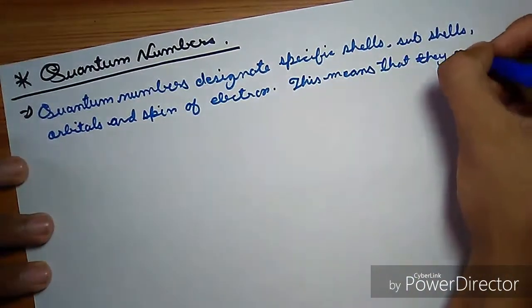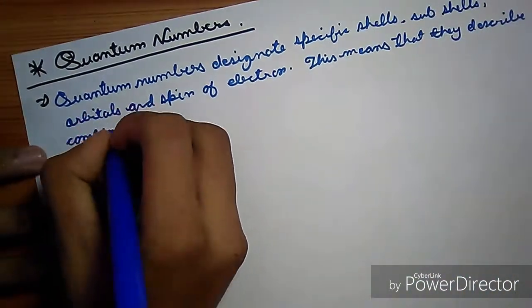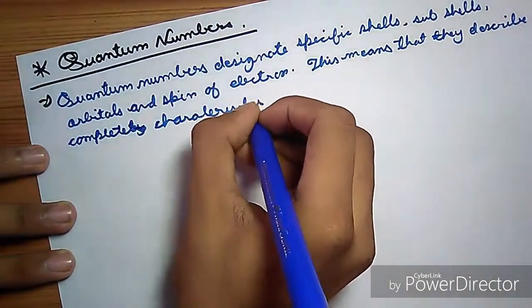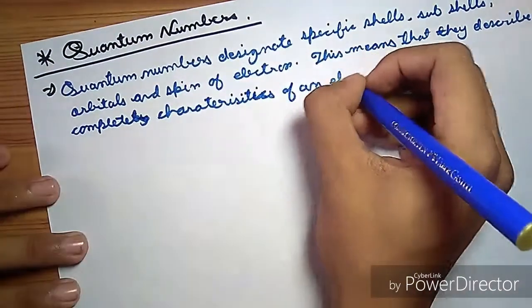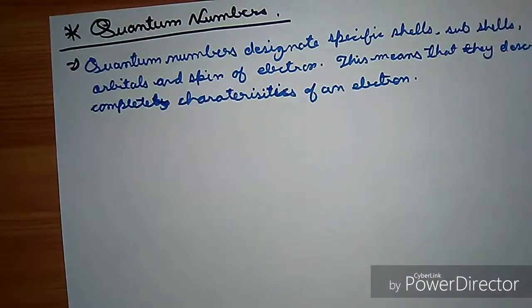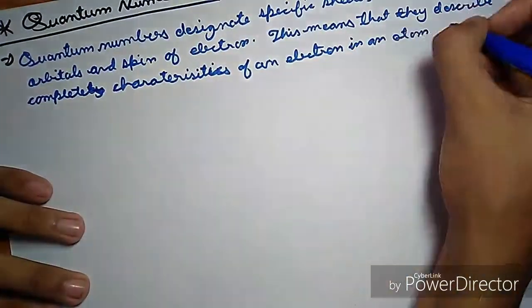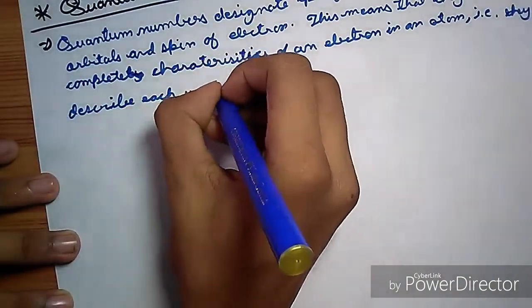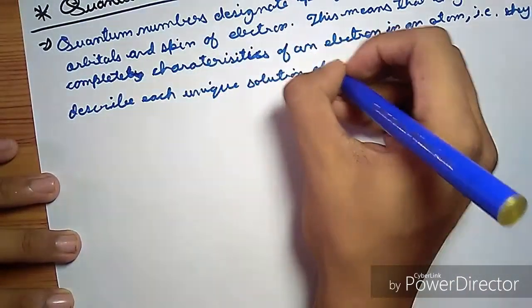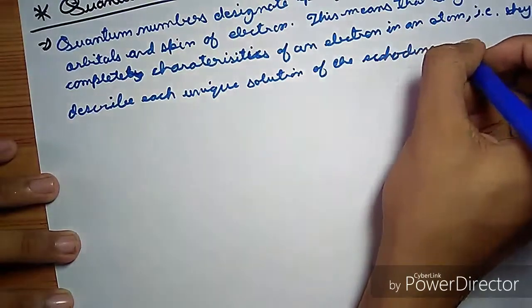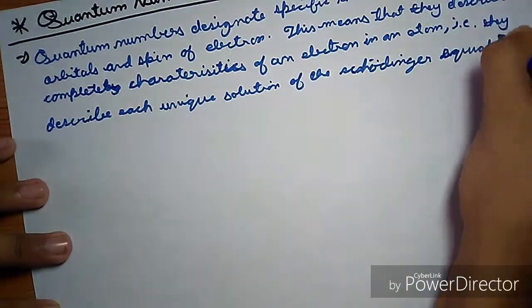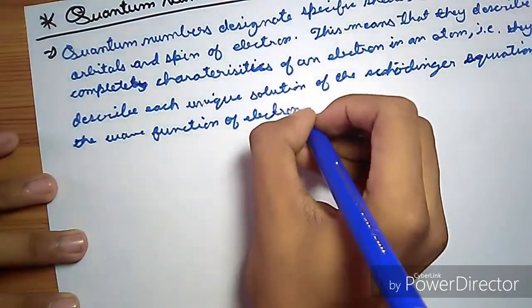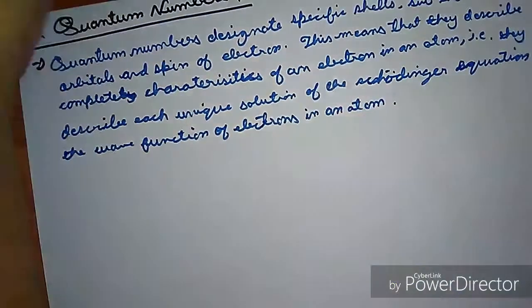This means that they completely describe characteristics of an electron in an atom. For example, they describe each unique solution of the Schrodinger equation or the wave function of electrons in an atom.